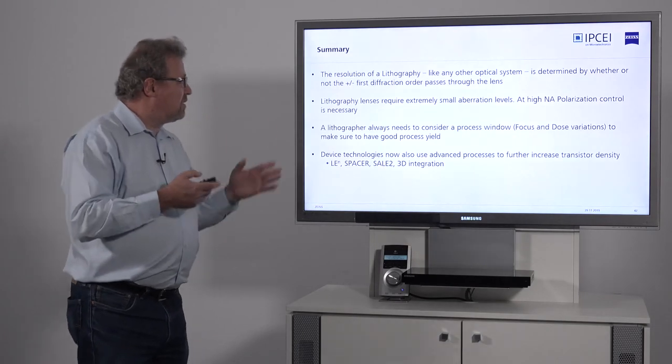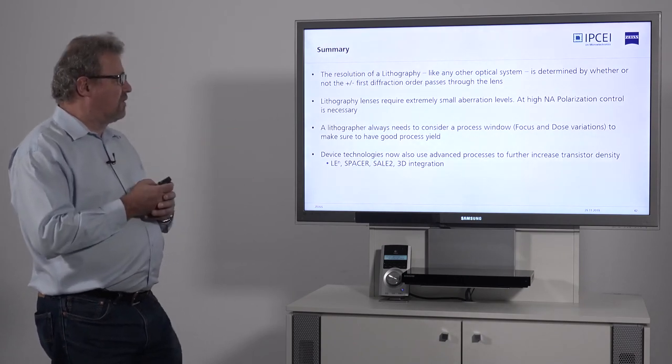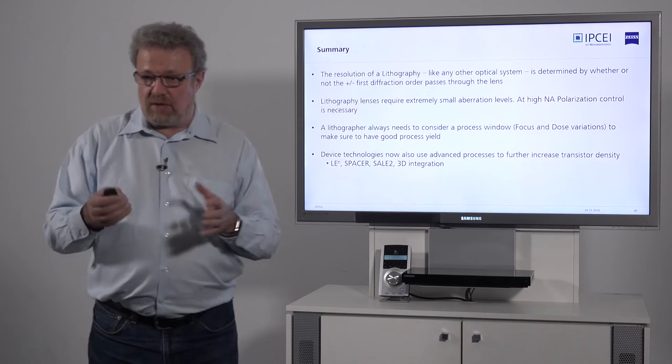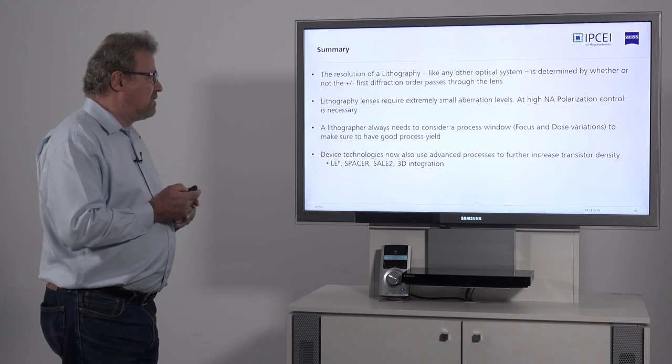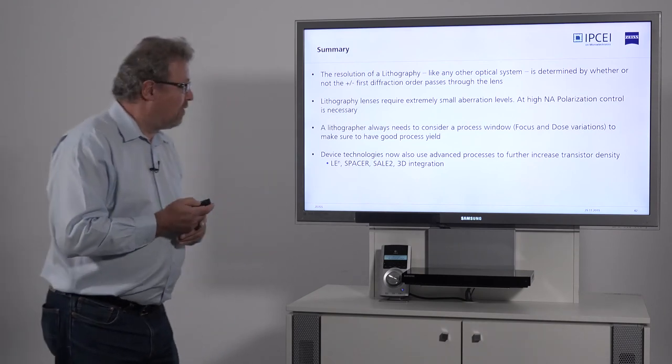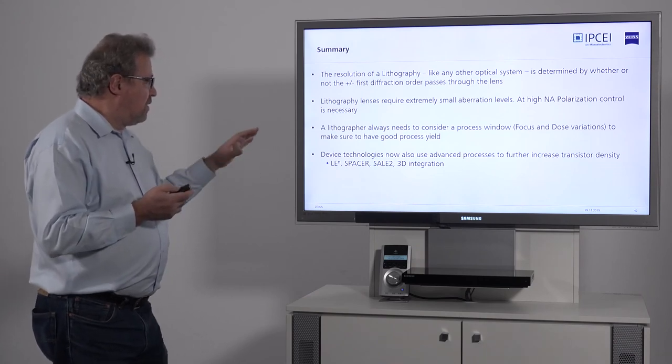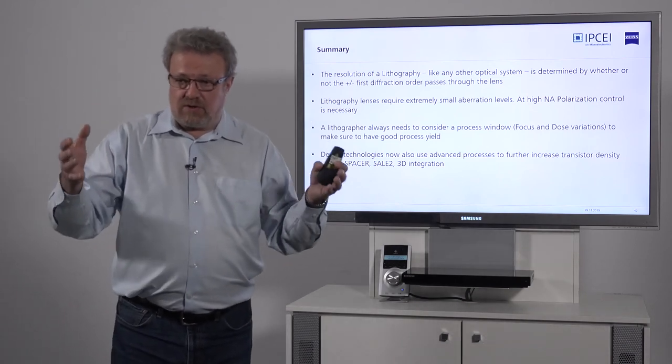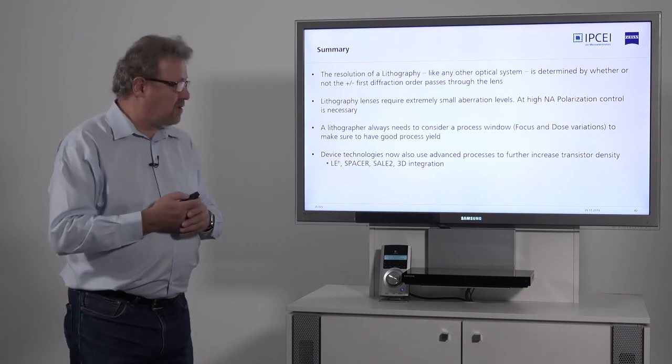So with this, I'd like to summarize that second part. The resolution of lithography, like in any other system, is determined by whether the plus minus first order can pass through the lens. That's what determines the resolution. Lithography lenses require extremely small aberration levels, smaller than any other optical systems that we know of. At high NA, we even need to use polarization. A lithographer always needs to consider variations in his process, so he needs to understand what his process window is, and needs to make sure he sets up his process so that he gets the largest possible process window.